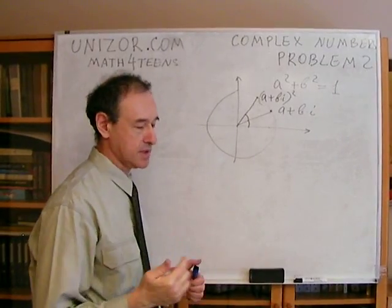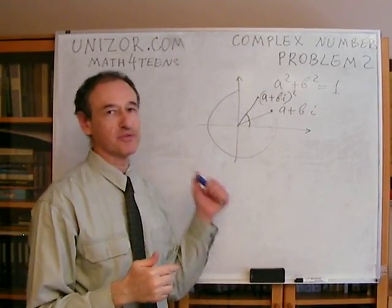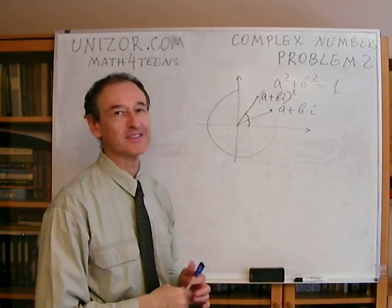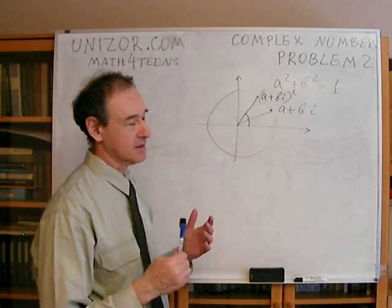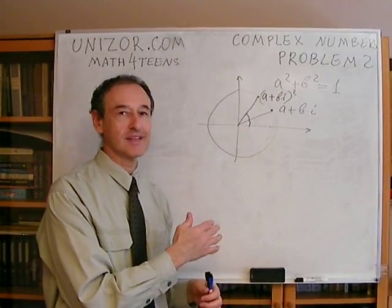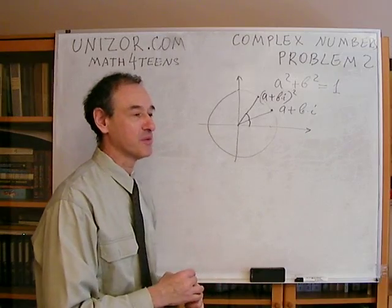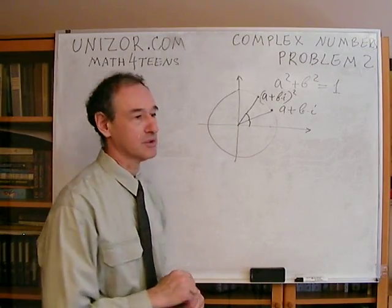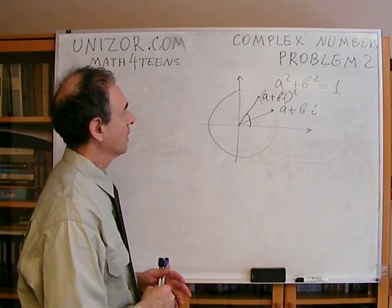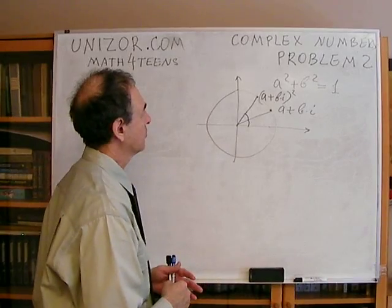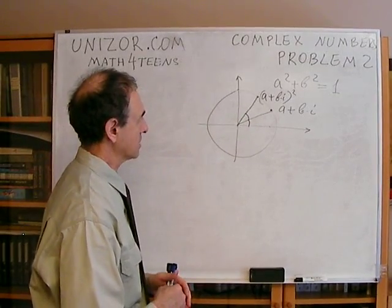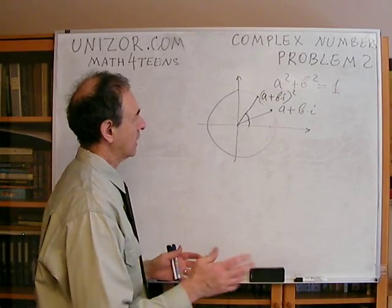By the way, I forgot to explicitly ask you to press the pause button before I started proving this. You can press it now if you want, because the most important part is number 2 — that the angle is doubled. Those of you who would like to try it on your own — and I do suggest you do — press the pause button and think about this yourself. I will continue now with proving the second part: that the angle doubles when squaring a complex number. This is a little more involved, but here it goes.